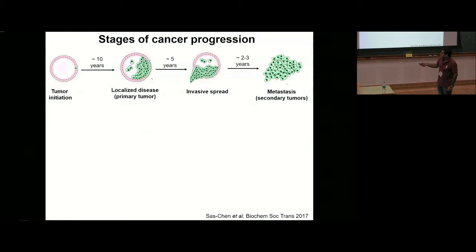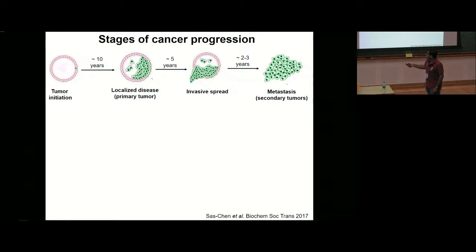The journey of a cancer cell begins in a specific organ, and then, as shown in green, it continues to divide much faster, trying to take up a larger chunk of the organ. But then it no longer remains restricted — it also tries to spread to different organs of the body and form colonies there. This process is what is called metastasis. The numbers can differ for different cancers, but what I'm emphasizing is the acceleration that happens once cancer actually starts to spread.